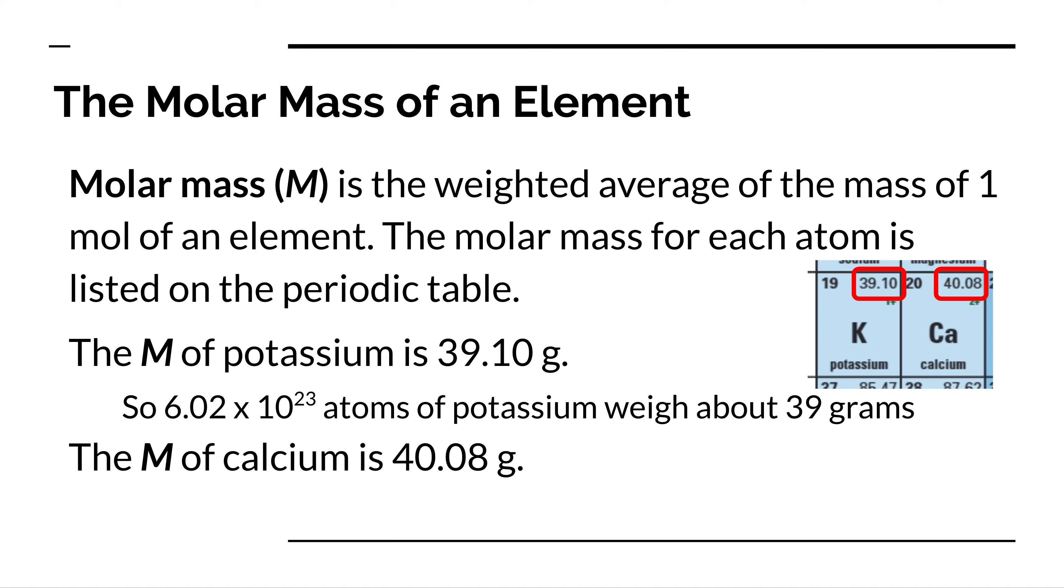You can find this often in the top right hand corner of the periodic table. This number does have decimal places in it. Most substances have molar mass rounded to two decimal places. And this is how you can tell the difference between molar mass and atomic mass.